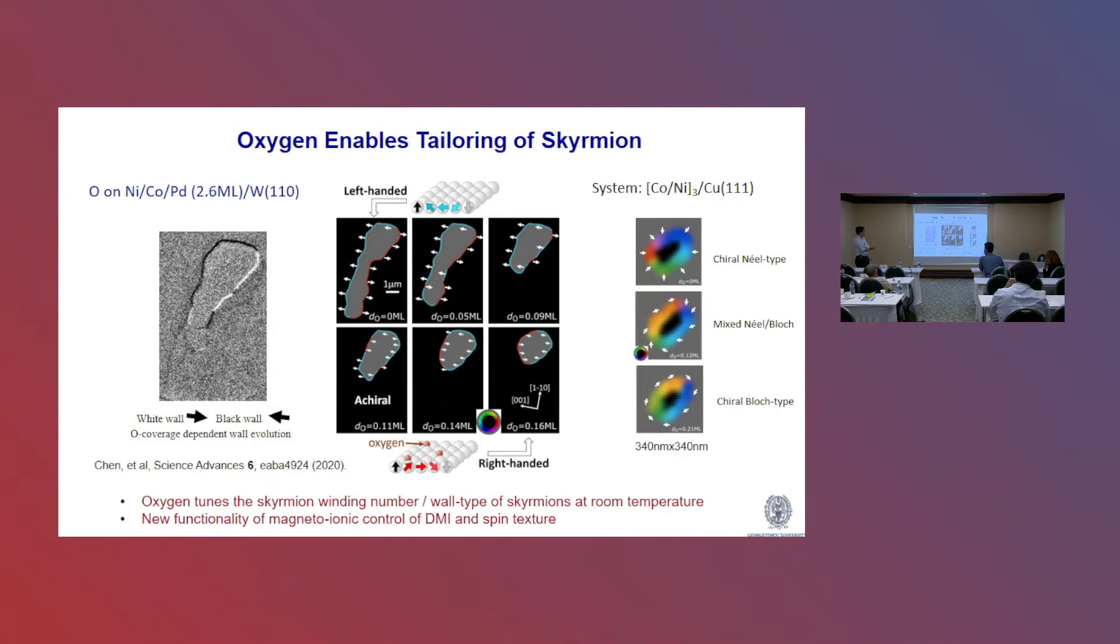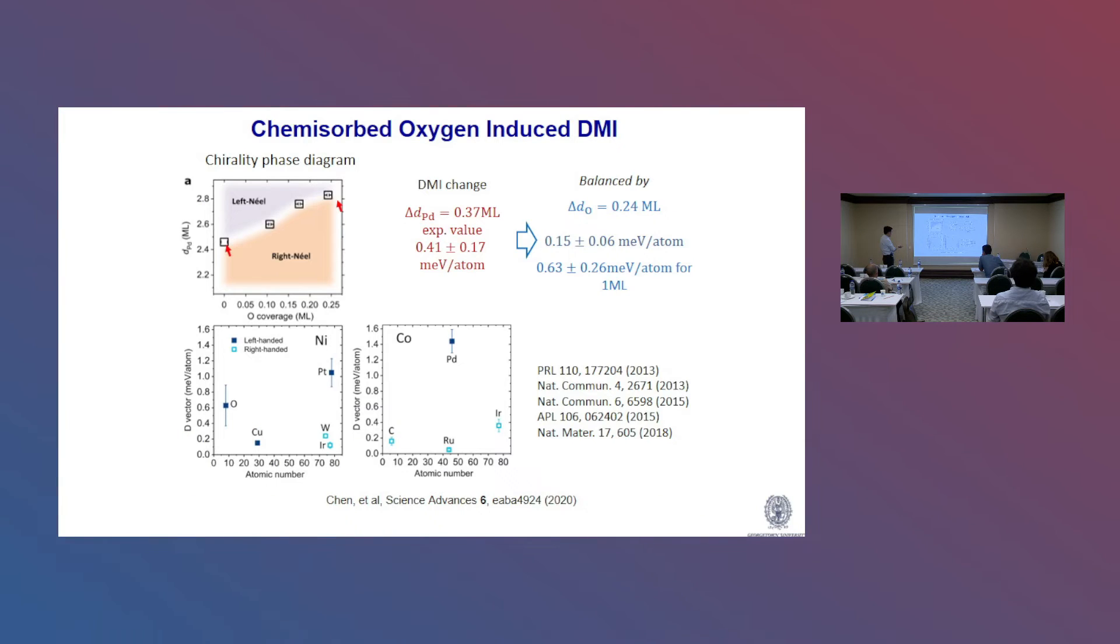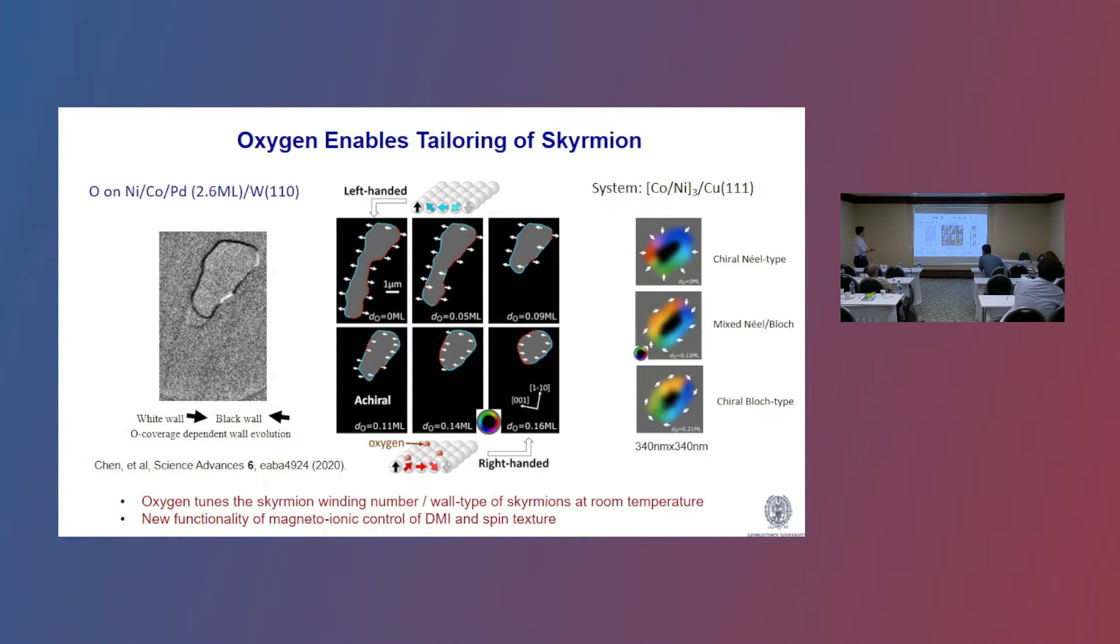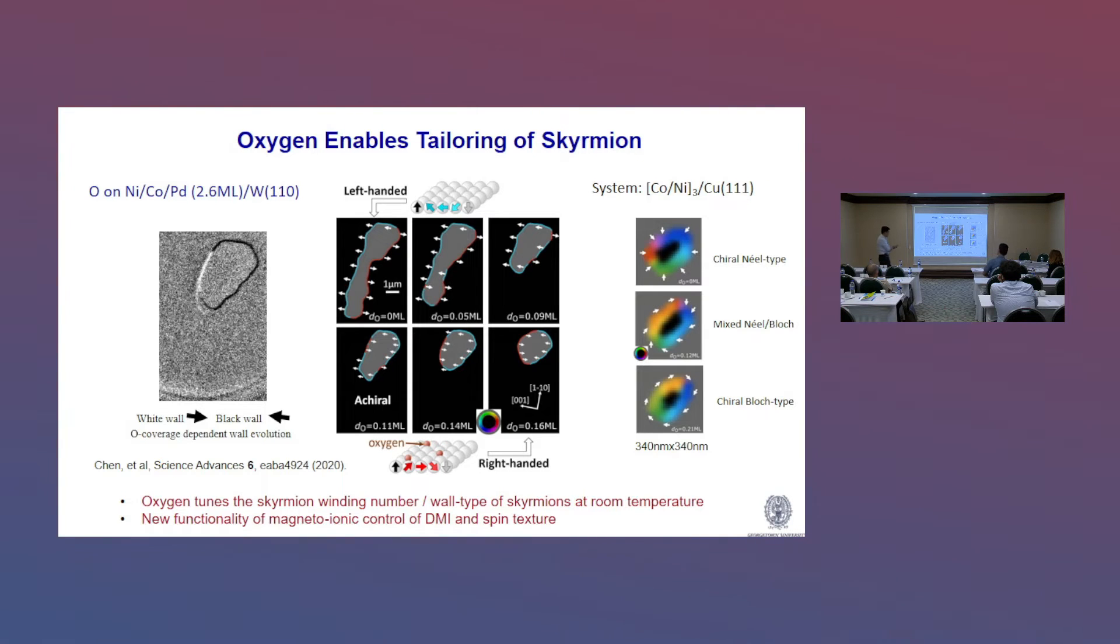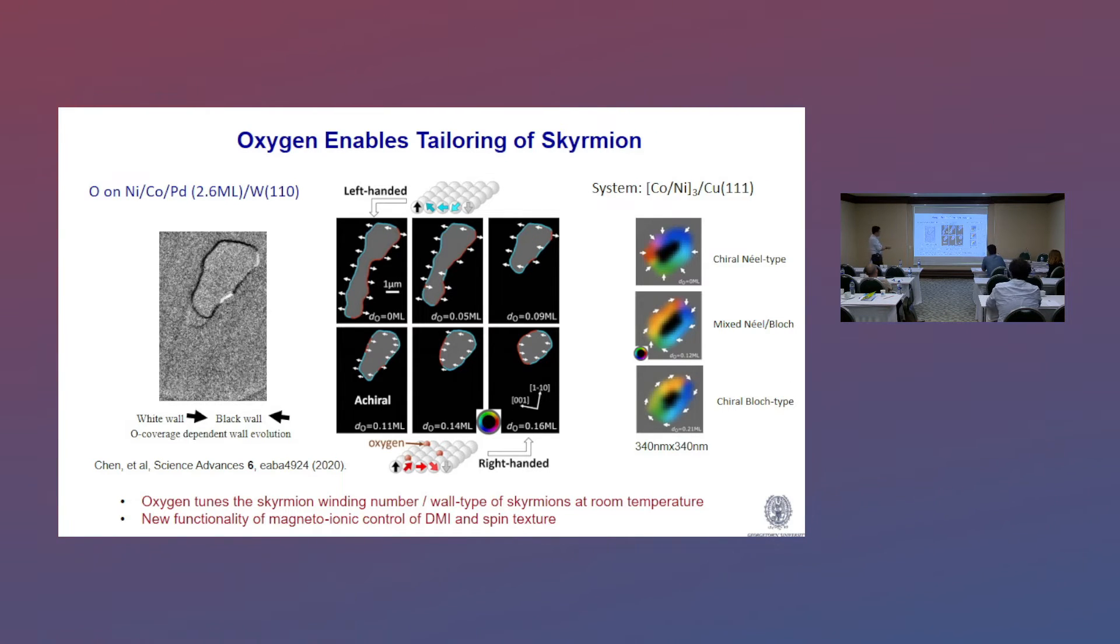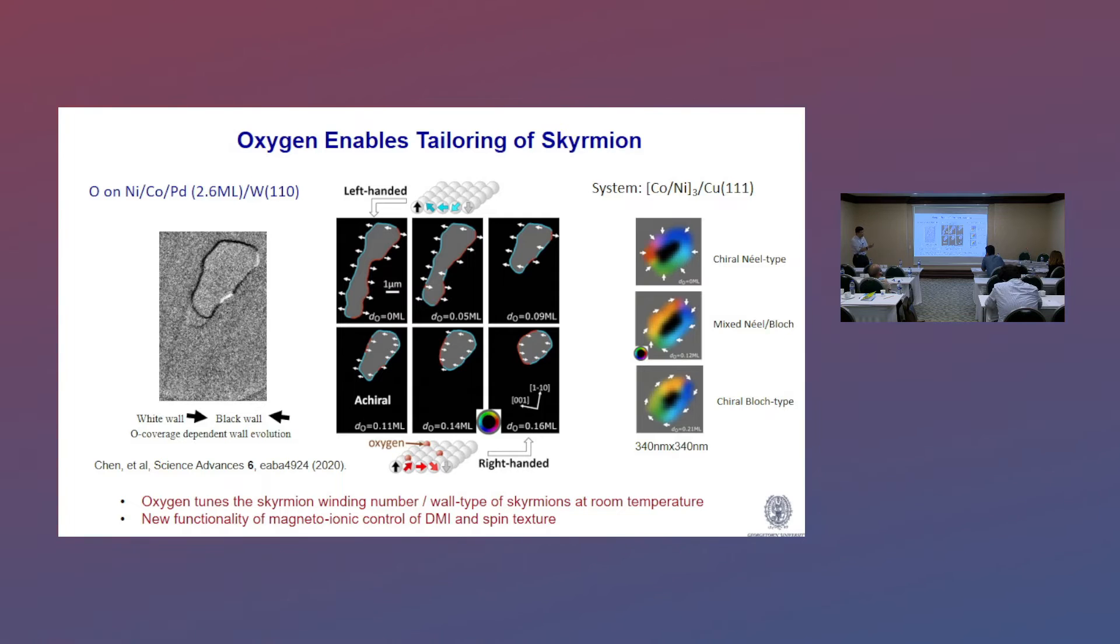So with this large DMI, we're able to actually manipulate spin texture. Here is a skyrmion bubble initially on top of a 2.6 monolayer of a palladium. As we introduce oxygen, it goes from initially left-handed to achiral and then eventually right-handed skyrmion. And this is all done just at room temperature with oxygen. In this particular system, there's a little bit of a weak residual uniaxial anisotropy. So we've also looked at another system without the palladium getting rid of this anisotropy. And we see this transition from chiral Néel to chiral Bloch. So this indicates the chemisorption induced effect is actually quite useful to allow us to manipulate the spin texture.